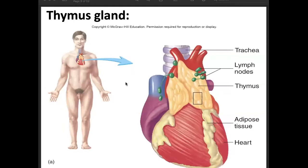This is your thymus gland, located on the superior part of your mediastinum. It is a bilobed gland, roughly triangular in shape, located in the superior mediastinum behind the sternum. It stops growing at the age of one, and at the age of 60 it will decrease in size. Your thymus gland produces and matures lymphocytes called your T-cells.